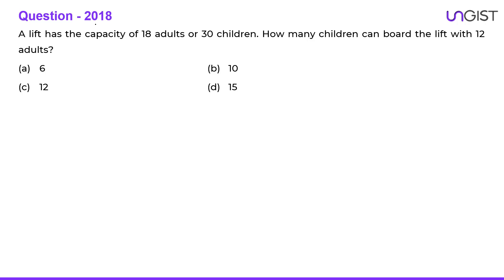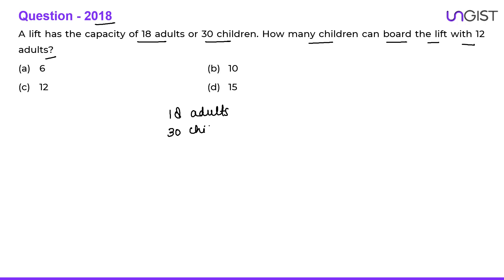Question number 1, which came in 2018: A lift has a capacity of 18 adults or 30 children. How many children can board the lift with 12 adults? I have kept this question in this topic because we take the LCM approach while solving time and work questions. The capacity is 18 adults or 30 children, so take the LCM of 18 and 30, which is 90.